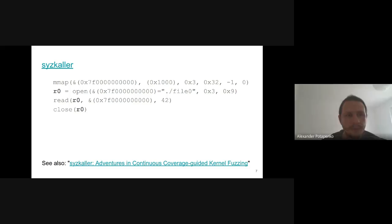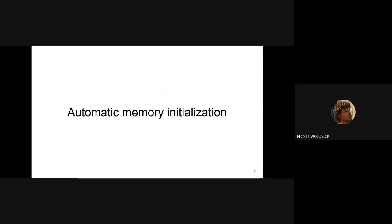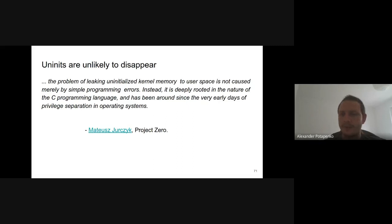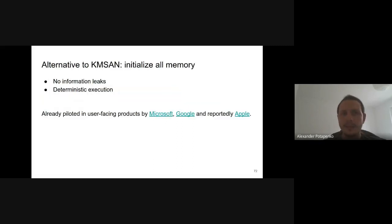It's quite unlikely that bugs related to uninitialized variables disappear anytime soon. Security researcher Mateusz Jurczyk from Project Zero suggests that leaks of uninitialized memory are deeply rooted in the nature of C. This is also valid for other bugs related to uninitialized values. So what can we do to deal with these bugs that keep piling up?